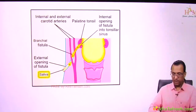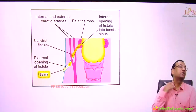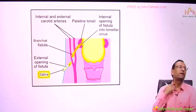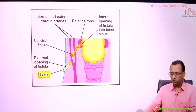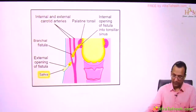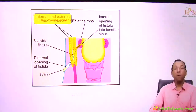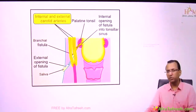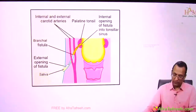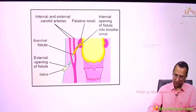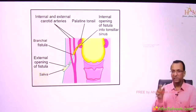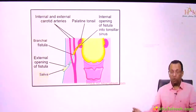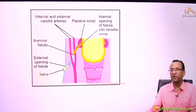When you try to remove this fistula tract, be very careful because it passes between the two branches of the common carotid artery — the internal and external carotid arteries. During surgical removal of the branchial fistula, do not damage the external or internal carotid artery. The tract passes between these two arteries, so surgical caution is essential.